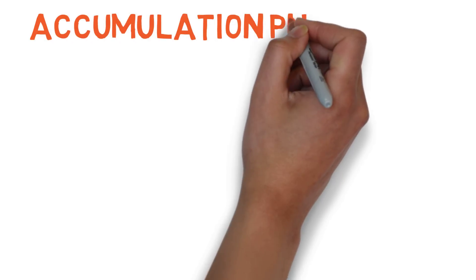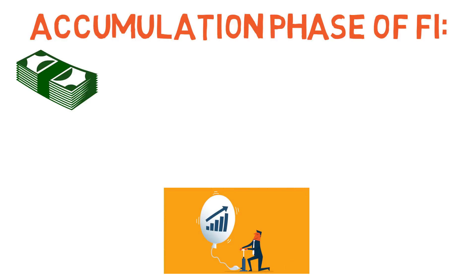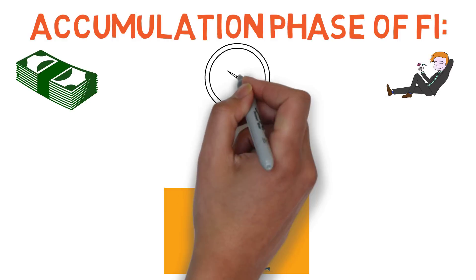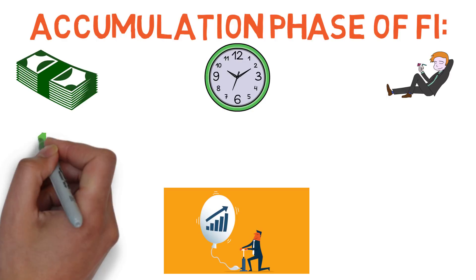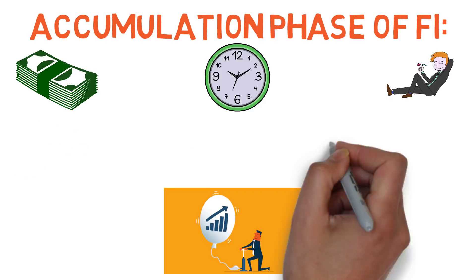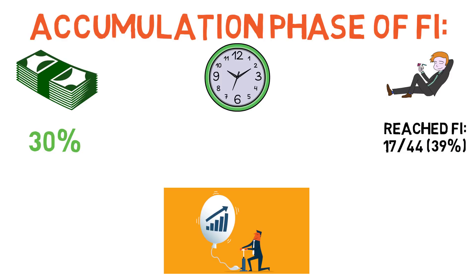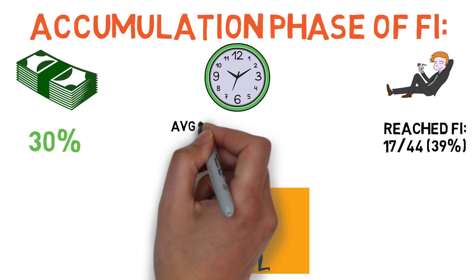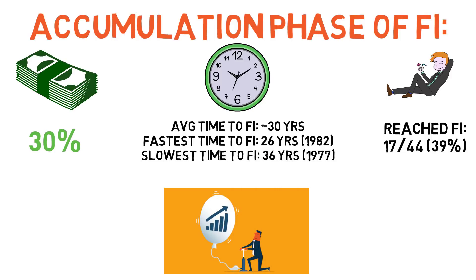In the accumulation phase, assuming expenses change with inflation and planning for a 30-year retirement, saving 15% of income would leave any investor still waiting to reach financial independence regardless of start year. With a 30% savings rate, a hypothetical investor would have reached financial independence in 17 of the 44 scenarios, with the average time to FI taking about 30 years. The fastest was 26 years starting in 1982, and the slowest was 36 years starting in 1977.